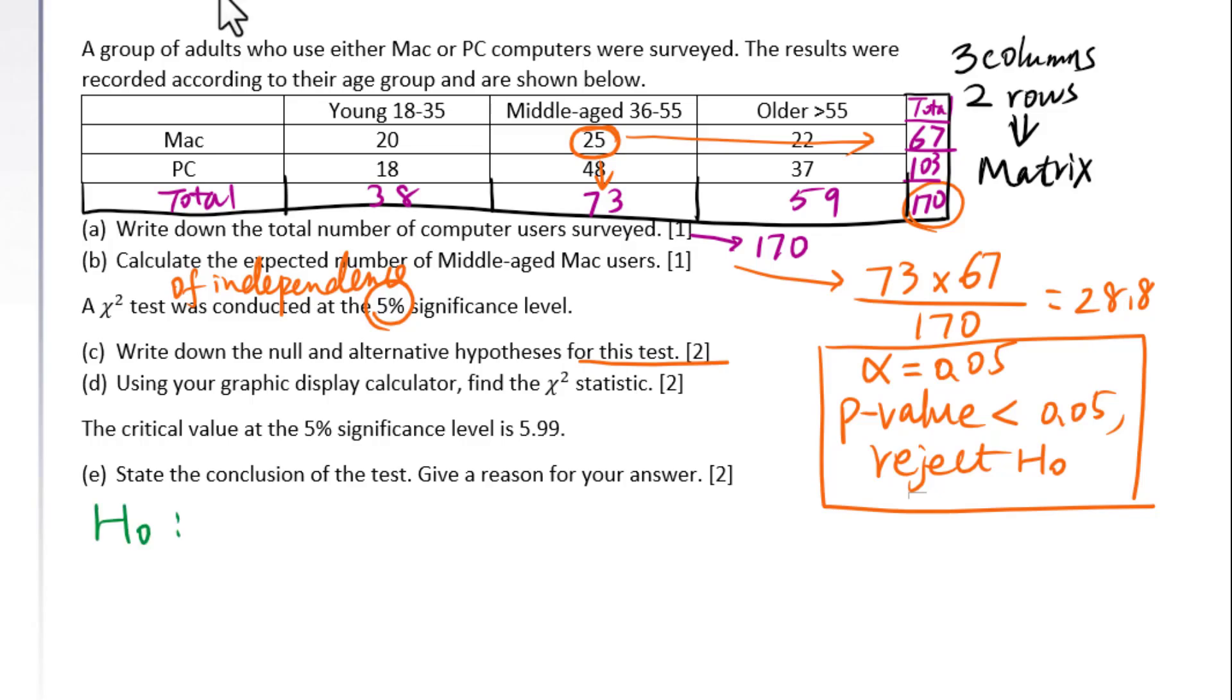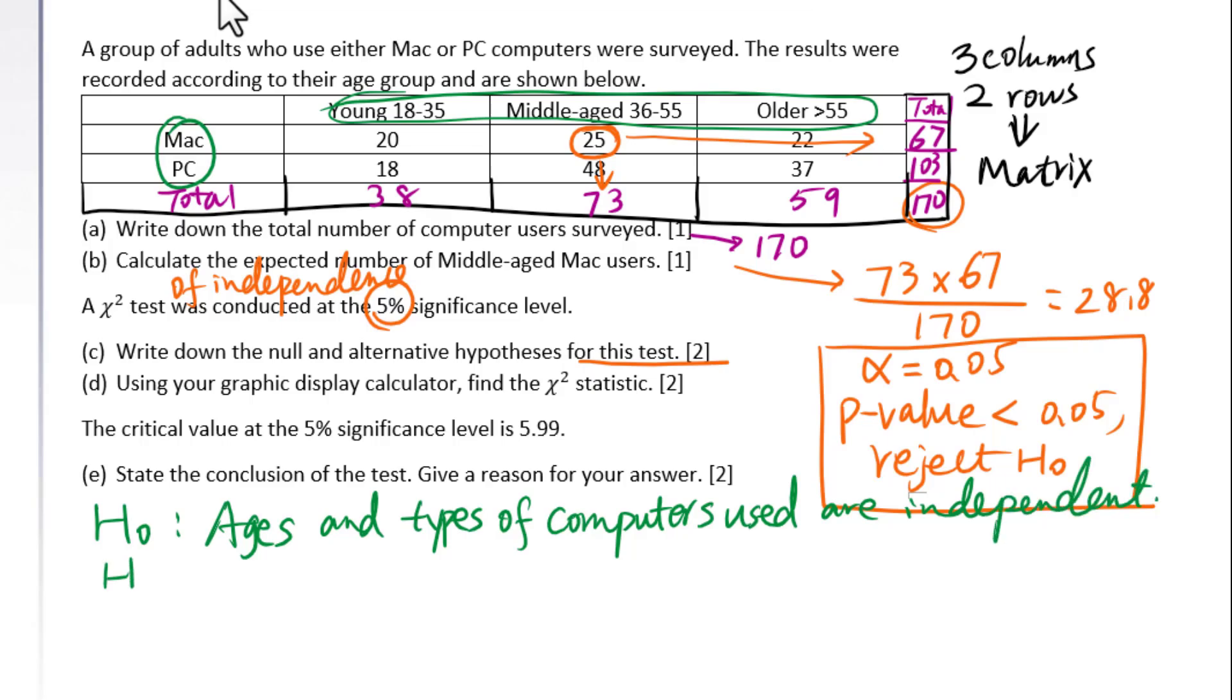For null hypothesis look at the column. This is the type of computers. This is age. So we'll say ages and types of computers used are independent. For H1 ages and types of computers used are dependent.